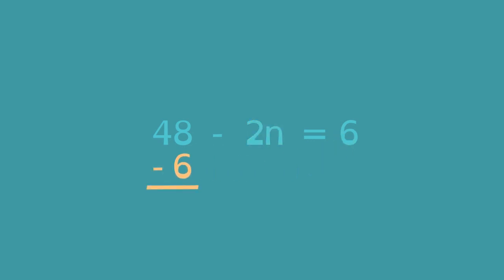48 minus 6 is 42, which means 2n is 42. Since 2 times n equals 42, 2 multiplied by something must equal 42. That something is 21, so n is 21.